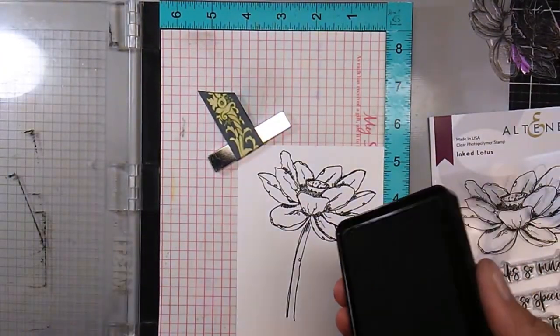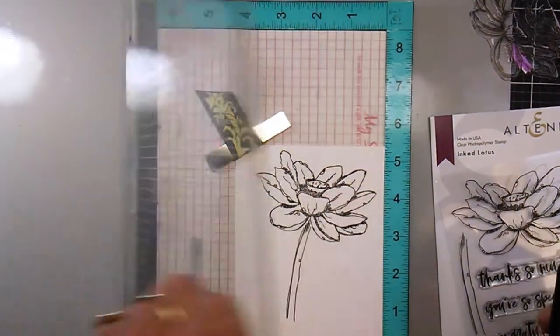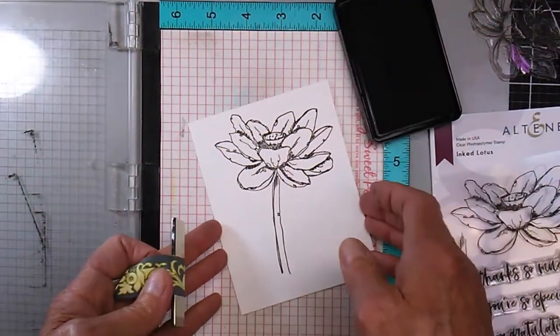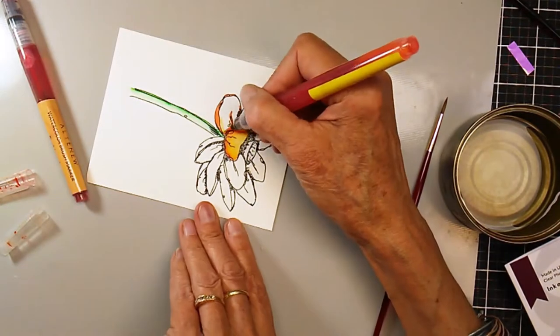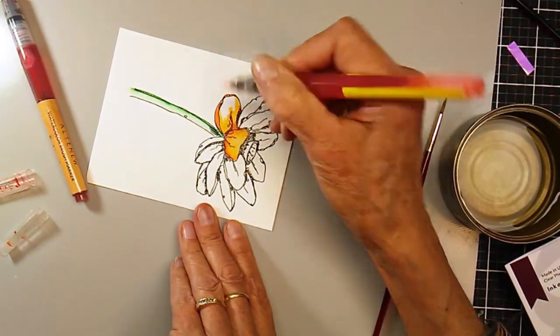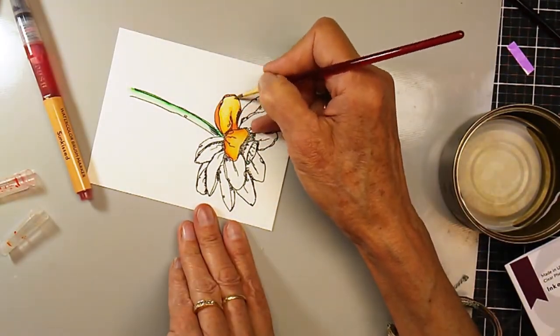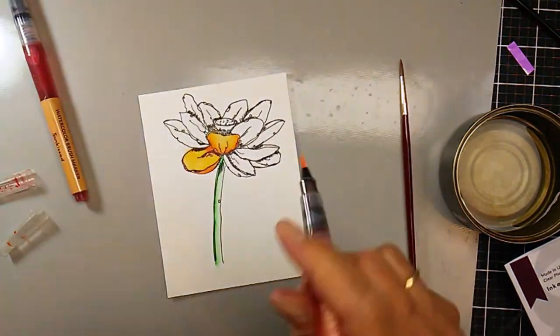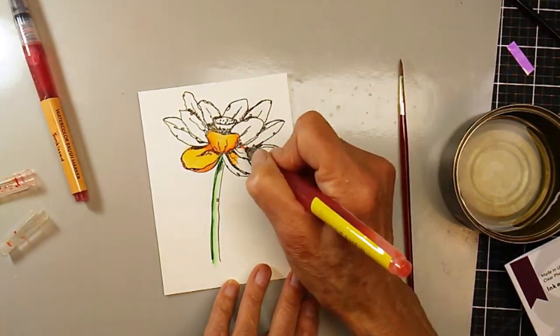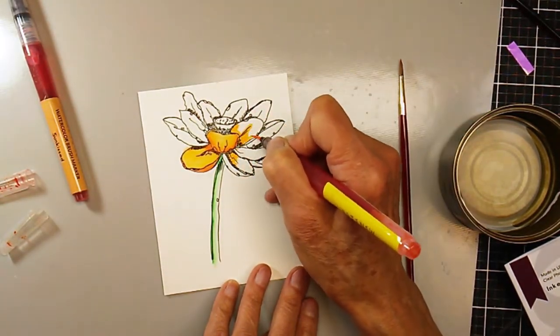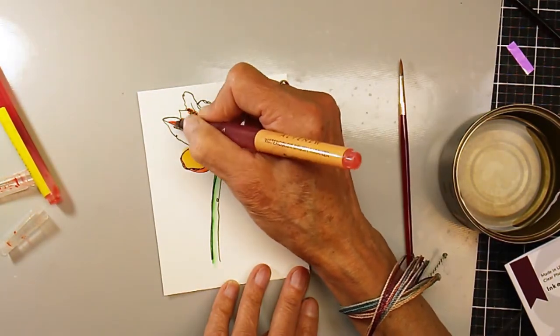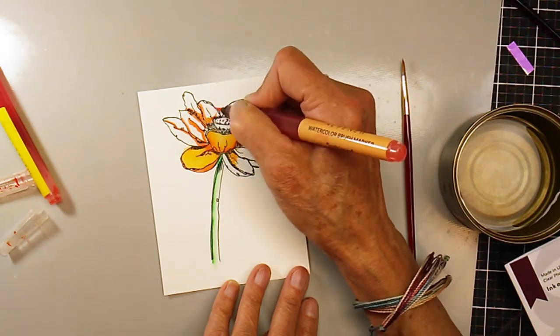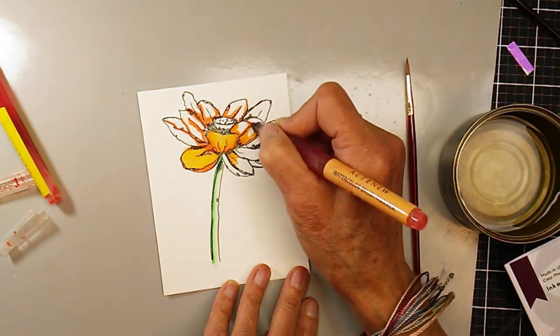The next thing I did was grab the inked lotus stencil and stamped it. Then I'm going to grab my Altenew Watercolor Brushes and just paint in the background, watercolor in the background. I'm using the sun-kissed and the bright yellow and different colors here to achieve the water-colored look.